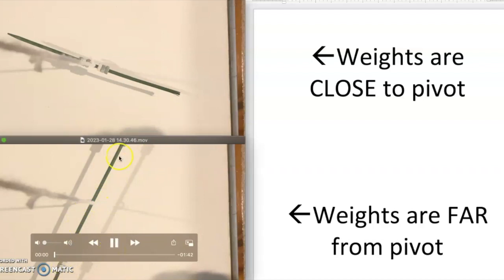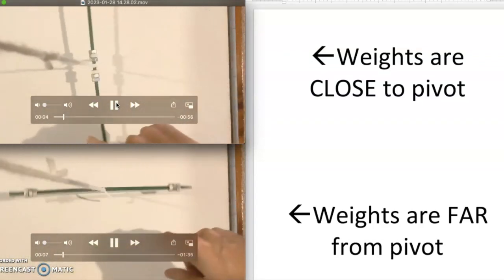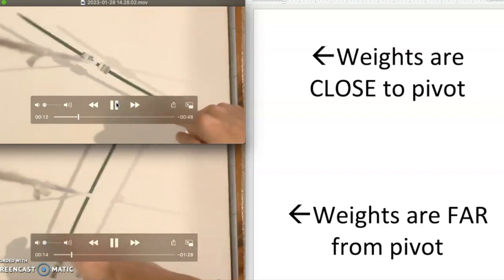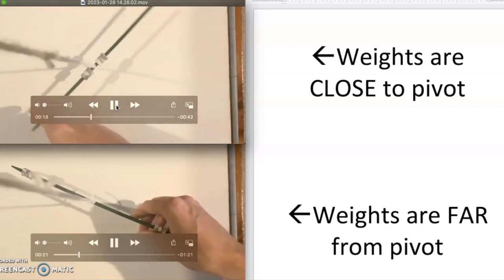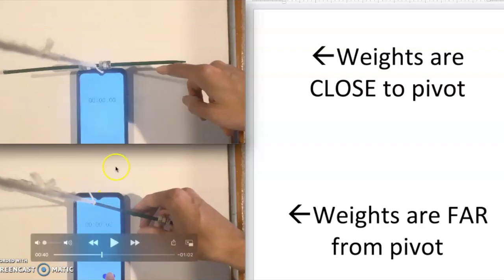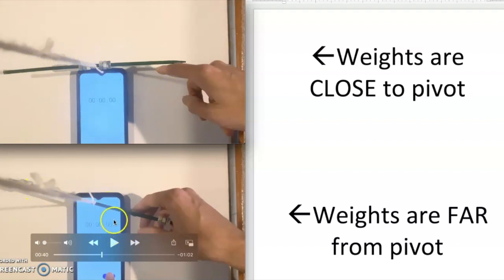I twisted each of them up 10 times — I want to show you I'm not doing anything tricky, you can count along and watch. Once each is twisted up, I'll pause and then skip forward to the part that matters. The important thing to pay attention to when I hit play is the rate at which each object spins. They have the same mass — same skewer, same number of metal objects — just positioned near the center on one and near the ends on the other.